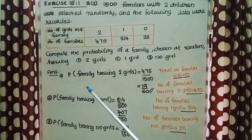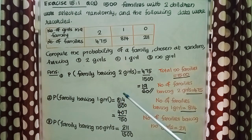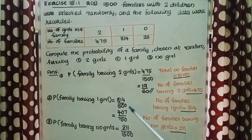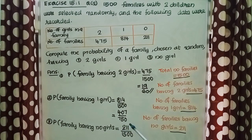Probability of a family having 1 girl: number of families having 1 girl = 814, so probability = 814/1500. Dividing by 2, we get 407/750. Next, probability of a family having no girls: number of families having no girls = 211, so probability = 211/1500.